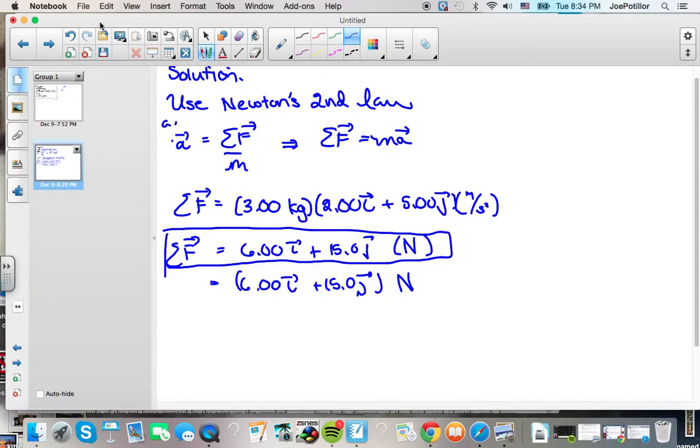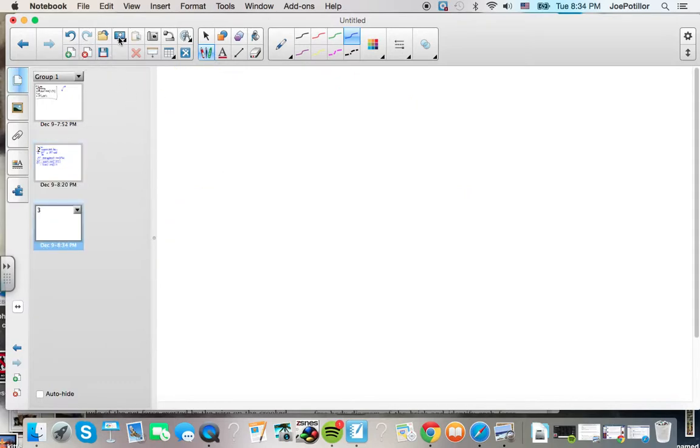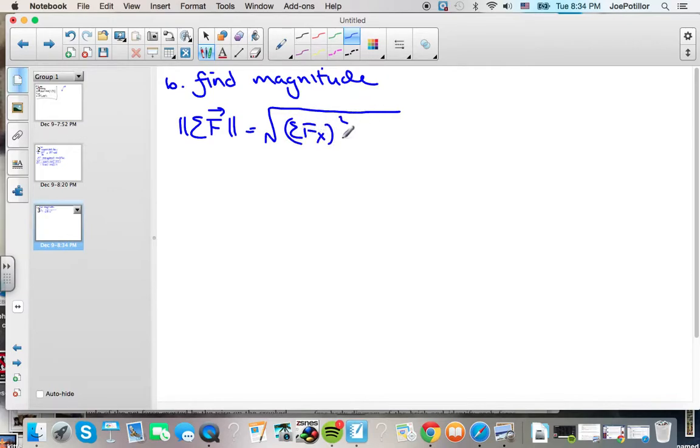In part B, we use to get the magnitude of the force. We know the magnitude of the force will be the square root of sum of forces x squared plus the sum of y squared, F of y squared.